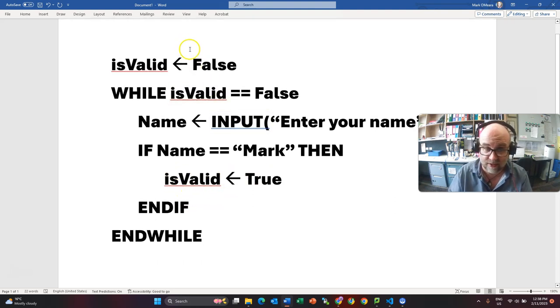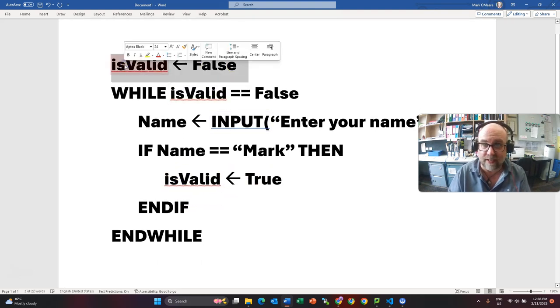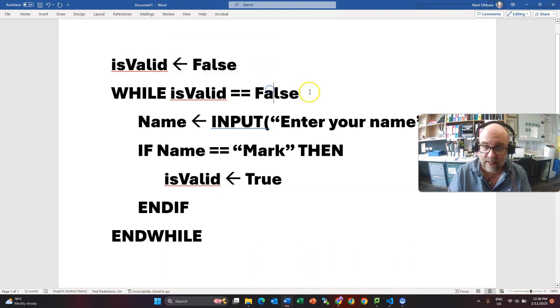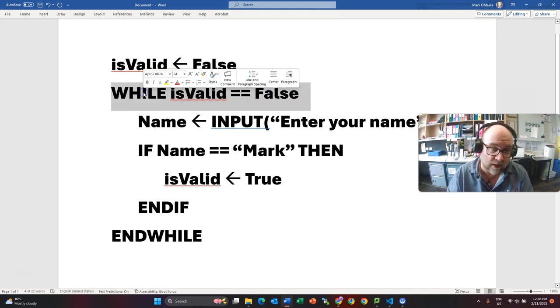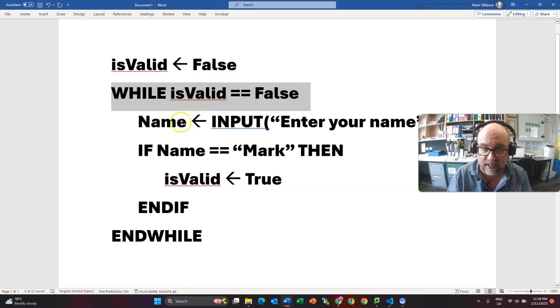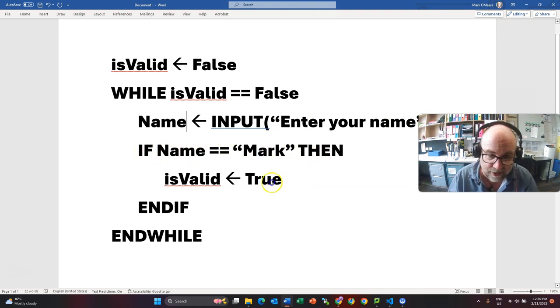So just to run through the logic of this. We start off with is valid is false. Now, while is valid is false. Well, at the moment, it is false. So we go right ahead into here. We get their name and they type in Kevin. I test. If name equals Mark. Well, it doesn't. So we don't do this line.